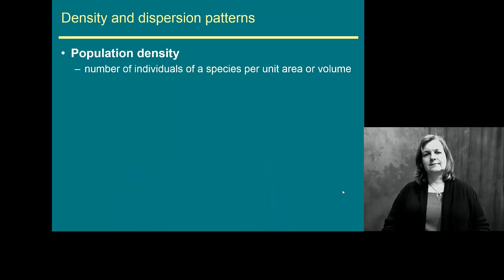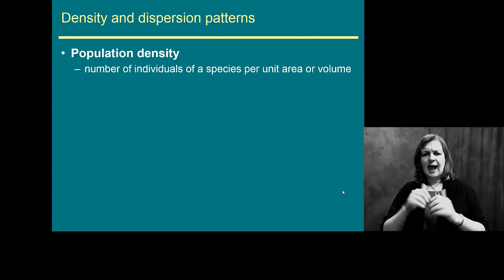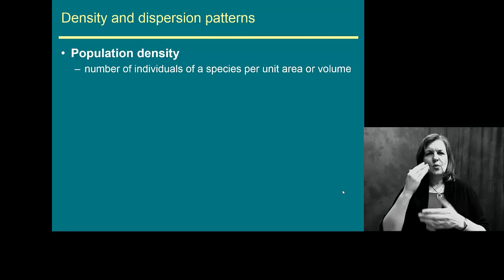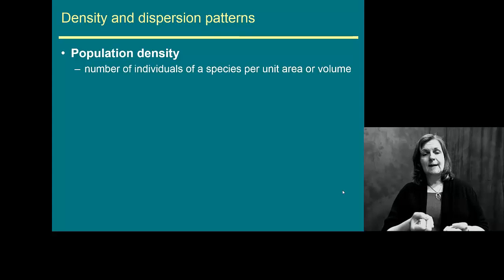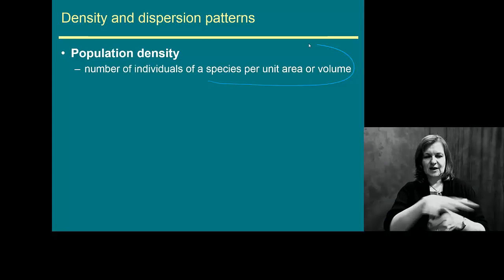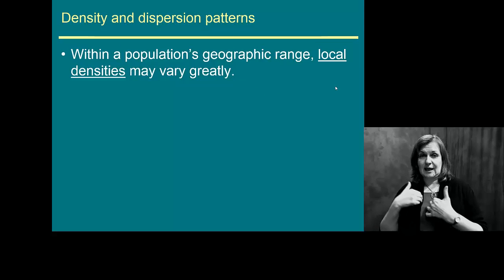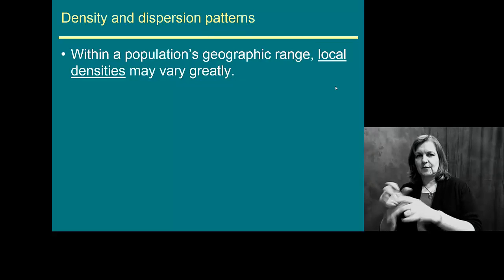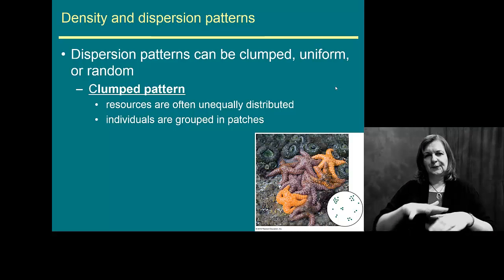When we look at changes in these populations, what we're really interested in is how populations impact one another, particularly in a community structure. So we want to know how dense a population is — we start looking at numbers of individuals per area or volume. Volume, of course, if you're talking about aquatic animals. So we want to know about local densities and how these organisms are dispersed across their habitat.